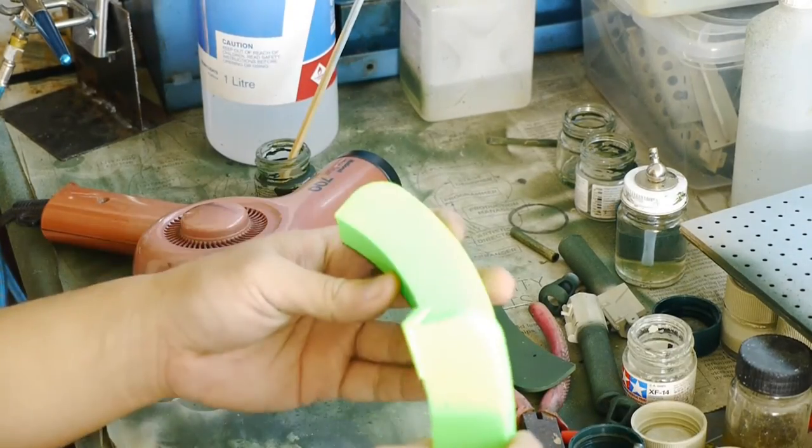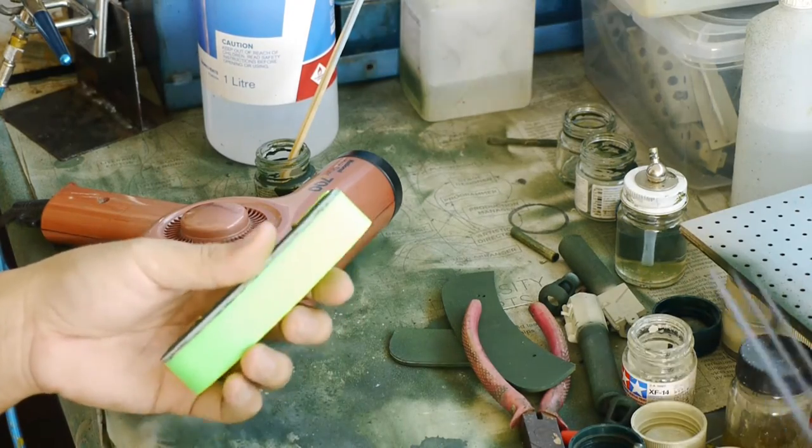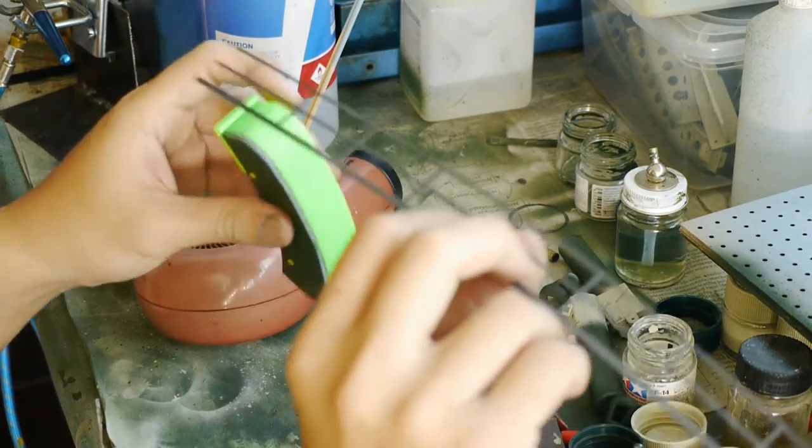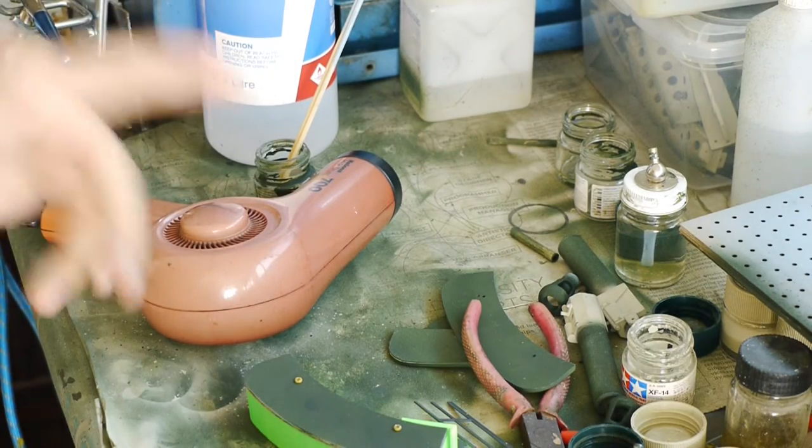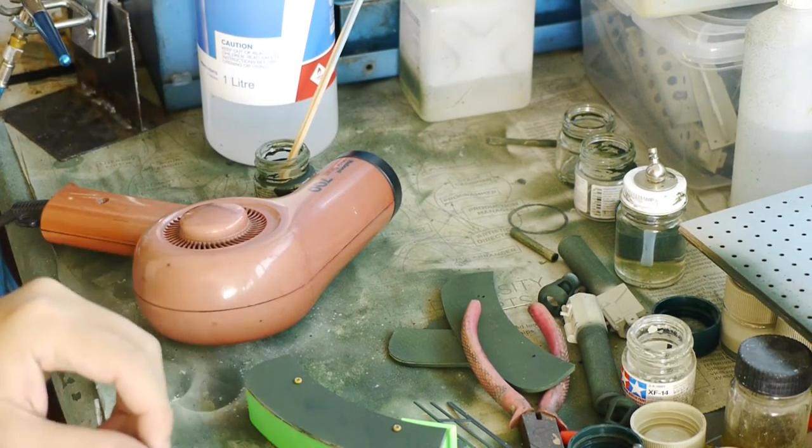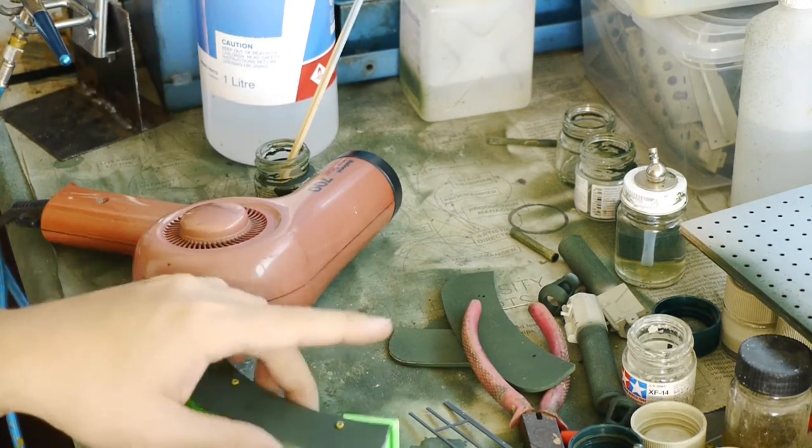So I've 3D printed these jigs for bending my railings on because when I was doing this last time it was a real pain trying to hold everything together. So I'm hoping that this helps.